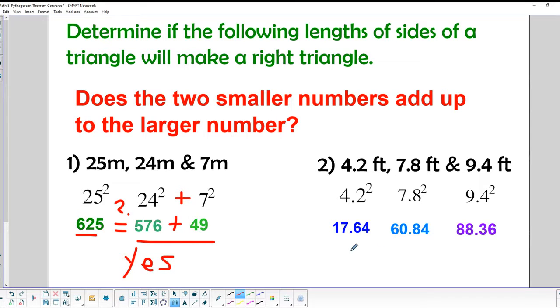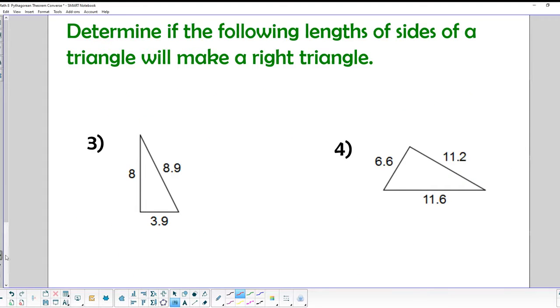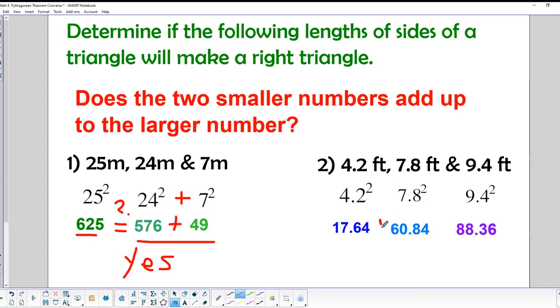What about over here? We've got to add these two smaller sides together. We'll do 17.64 plus 60.84, and that equals 78.48. And so 78.48 does not equal 88.36. So this does not make up the sides of a right triangle. It's just as simple as that.